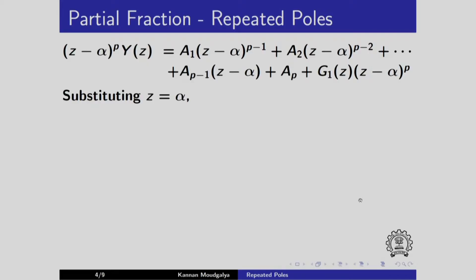When we substitute z equals alpha, every term involving (z minus alpha) becomes 0 — this term, this term, and this term all become 0 — except a_p. So we get a_p as this value evaluated at z equals alpha.